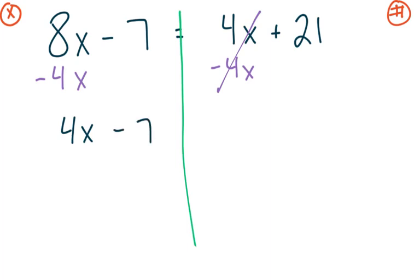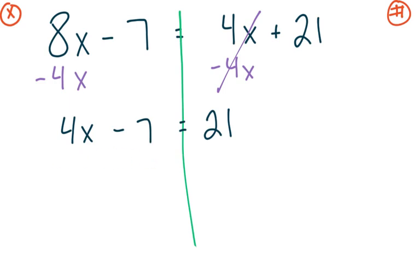We keep the minus 7, keep our equal sign, and on the right side we have already accomplished our first task — we wanted only numbers on the right side and so far I only have numbers on the right. But I still have some numbers on the left where I only wanted x's. So I'm going to solve this two-step equation just like we have in the past. We want our numbers over here, so we're going to start with the minus 7.